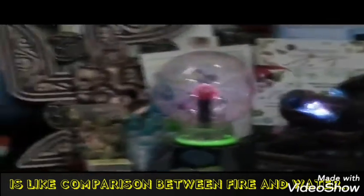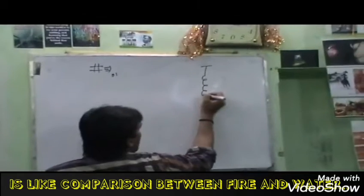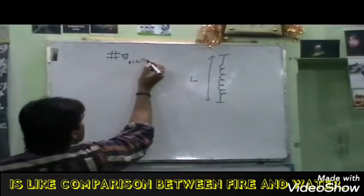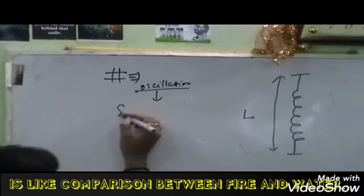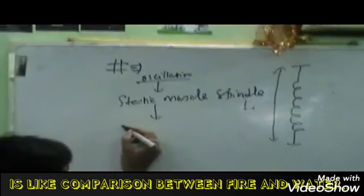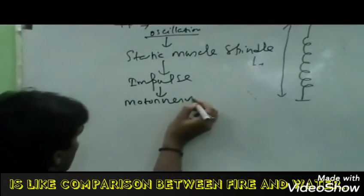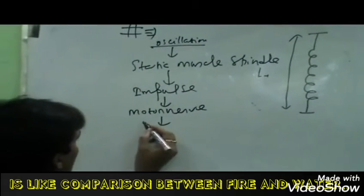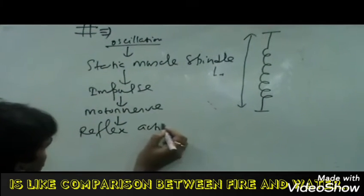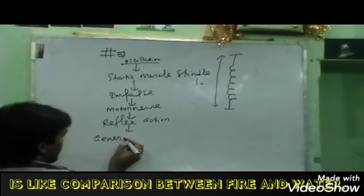First one, let's take a look at this. What is the static muscle spindle? What is the impulse? What is the motor nerve? What is generated for reflex action? Reflex action is generated.